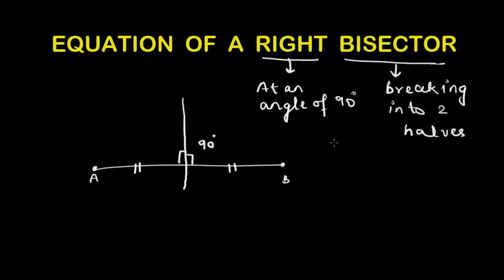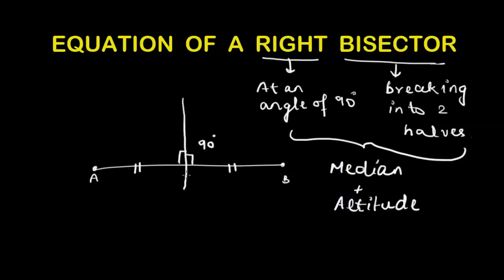We can say a right bisector is a combination of a median and an altitude. It falls at an angle of 90 degrees, so it is the altitude of AB. And because it meets AB at a point C where AC equals CB, it is also called a median.